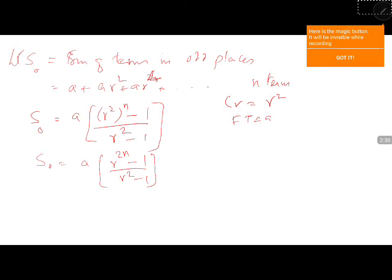It is given that the sum of 2n terms equals 5 times the sum of terms in odd places. So, a(r^(2n) - 1)/(r - 1) = 5 × a(r^(2n) - 1)/(r² - 1).